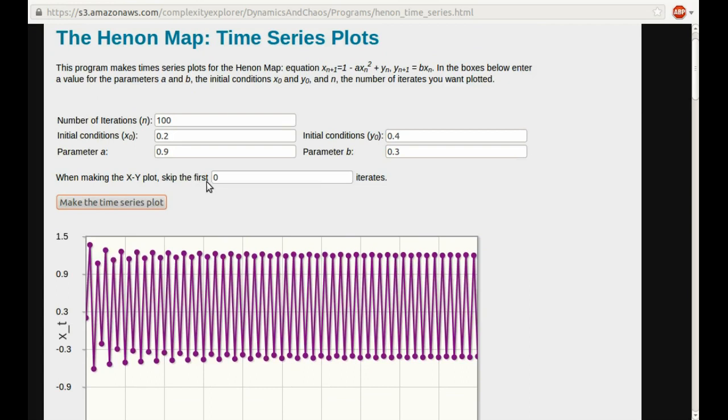So that's where this box comes in. When making the X-Y plot, this will let me skip some of the iterates. So I'm going to choose to skip maybe the first 50 iterates. So then what the X-Y plot will do, the blue plot down below, is the computer will iterate the function for 50 times, and it won't plot the points on that X-Y plot. But it'll only start plotting with the 51st iterate and do the next 50.